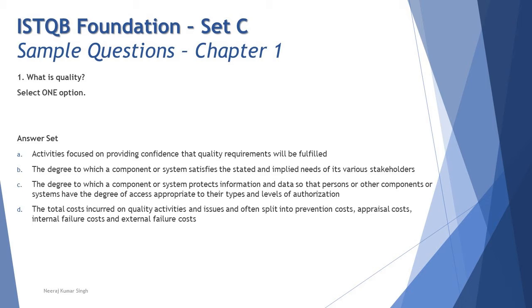D: the total cost incurred on quality activities and issues and often split into prevention cost, appraisal cost, internal failure cost and external failure cost. That is something which has to do with the cost of quality. In fact, not covered in our foundation syllabus at all. These cost of quality are covered as part of our advanced level syllabus. So putting all together, the right answer here is B: the degree to which a component or system satisfies the stated and implied needs of its various stakeholders.